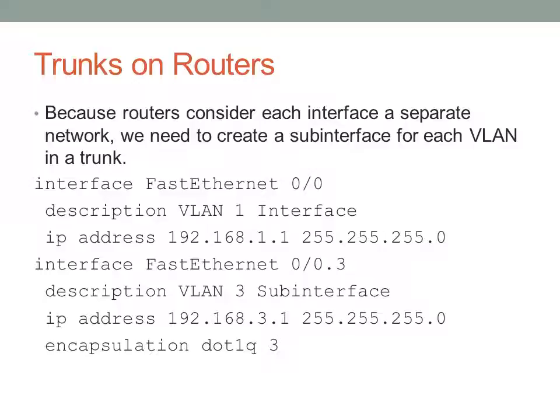To distinguish it from the FastEthernet0/0 traffic, I've given the command encapsulation dot1q 3, and that 3 specifies what VLAN is specified by the sub-interface. Now the encapsulation dot1q 3 and the interface FastEthernet0/0.3 - the 3 and the 3 there actually don't have to have any correlation. You create sub-interfaces at will, and so you may pick 0.1 as your first sub-interface and say encapsulation dot1q 3 - that would still place it in VLAN3.